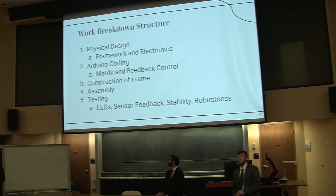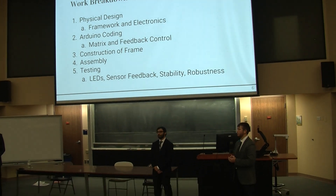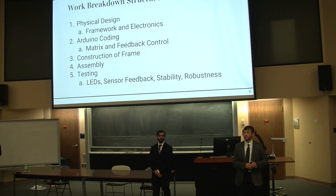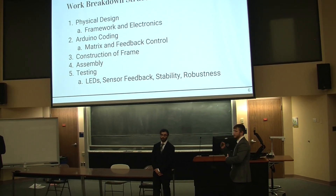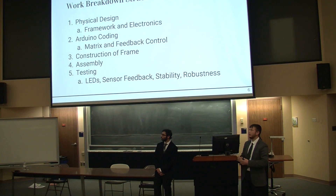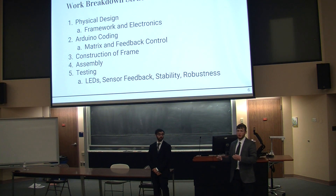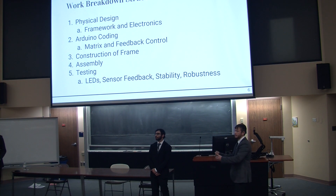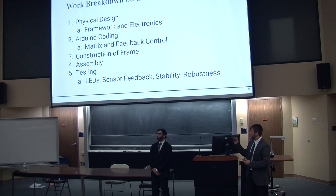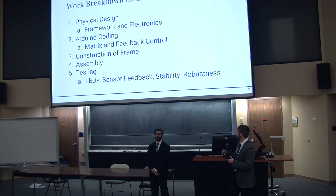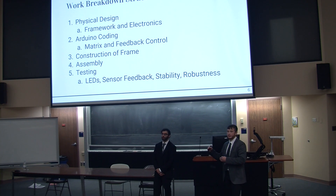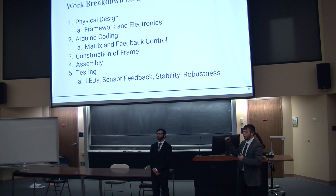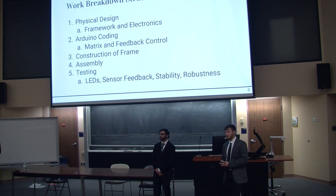With all that being said, we decided to break our project down into five main categories. These include the physical design — the framework and electronics we plan on using — the Arduino coding, which is how we will control the LEDs placed inside the chamber, the construction of the frame, the assembly of all components, and then the testing of our LEDs, sensor feedback, and the overall stability and robustness of our system.